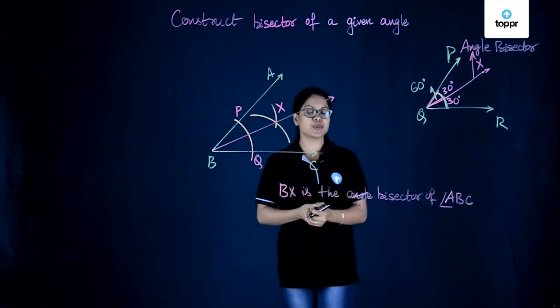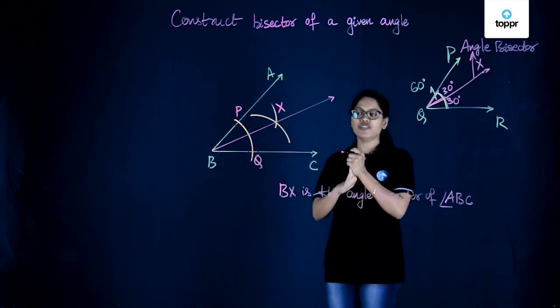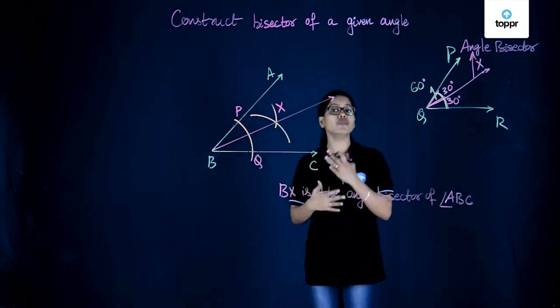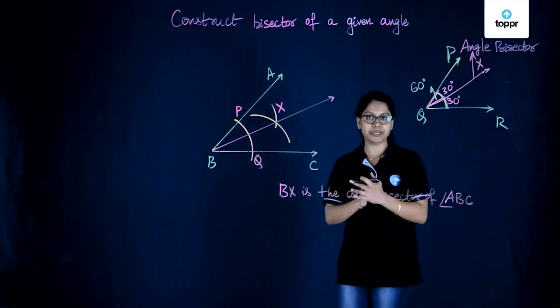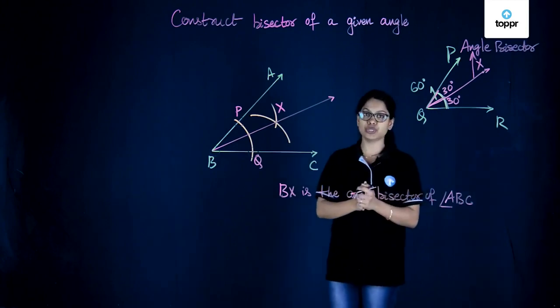Let's have a quick look at our steps of construction. We were given the angle ABC. So to draw its bisector, we first started by drawing an arc of any measure with B as the center. This arc meets AB at P and BC at point Q.